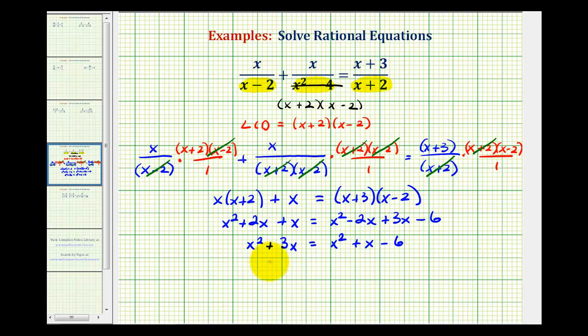Now it looks like we have a quadratic equation, but notice if we subtract x squared on both sides, the x squared term simplify out and we're left with a linear equation, three x equals x minus six. So let's go ahead and subtract this x term on both sides. This will give us two x equals negative six. Dividing both sides by two, we have x equals negative three.